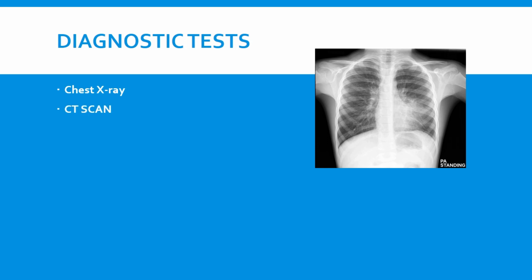When we suspect someone with pneumonia, we can order certain diagnostic tests. A chest X-ray and CT scan can reveal pulmonary infiltrates — the infiltration occurring within our lungs. We can also do arterial blood gas analysis, also known as ABG, in which we can see how much oxygen is passing from our lungs to the blood, how much CO2 is remaining in the blood, and whether there is alkalosis or acidosis.